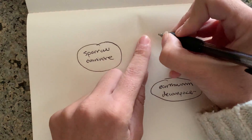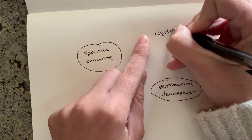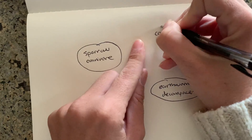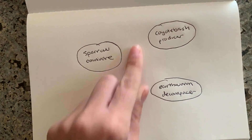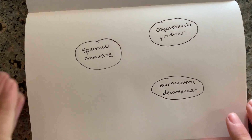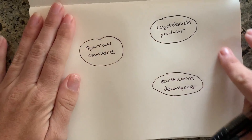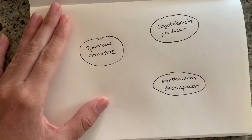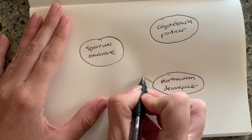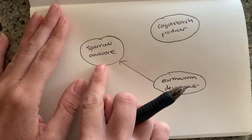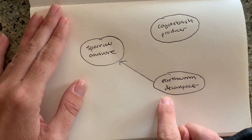I also had a coyote brush on my list, which is a producer. Continue this until your page is full with all the different organisms you have. Now we want to draw connections to show how energy flows — by showing who eats who. My sparrow is an omnivore that might eat one of our earthworms, which is a decomposer, so I might draw an arrow, because omnivores eat animals and plants, and an earthworm is an animal.